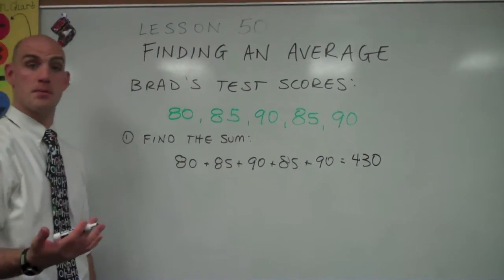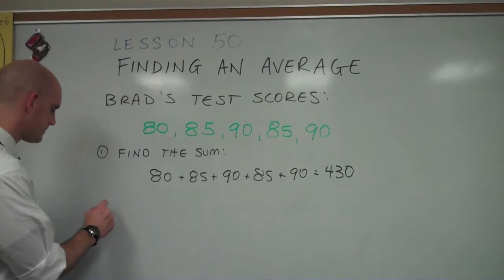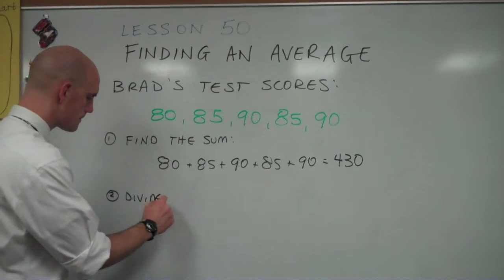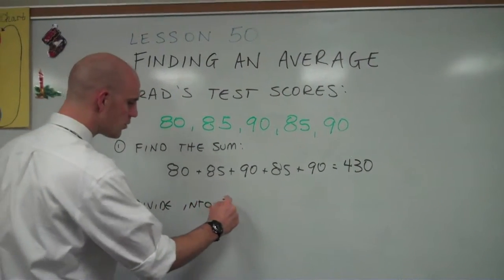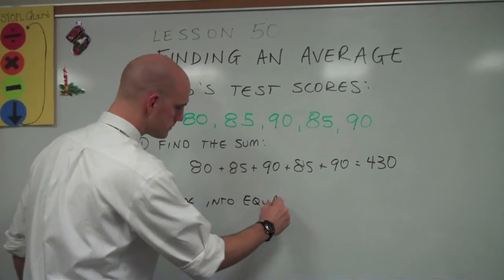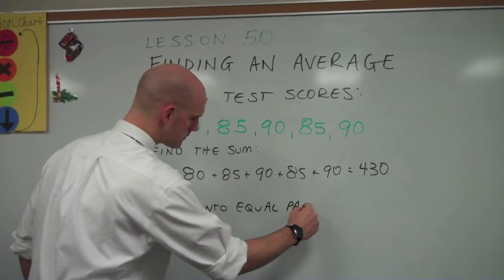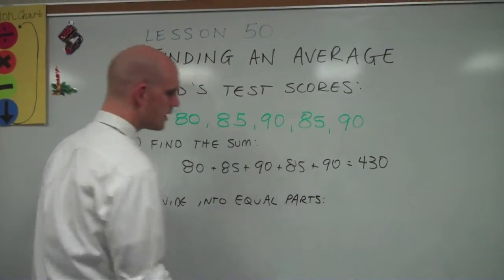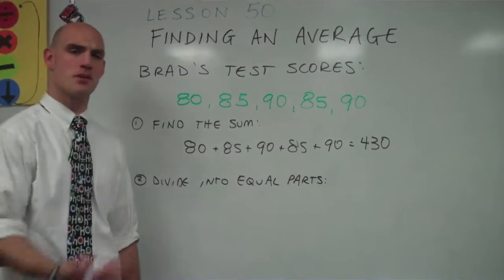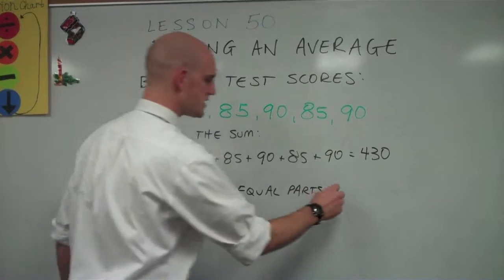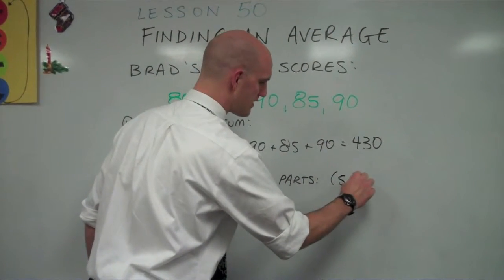The second step in finding the average is to divide into equal parts. The number of equal parts is determined by the total number of scores. So in this case, we're going to divide into five parts.